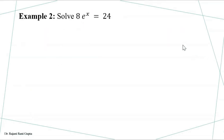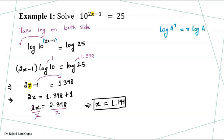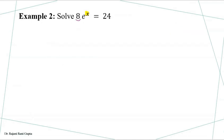Let's look at another example. Here, when asked to solve, it means we have to find the value of x. But unlike the previous question, we have 8 as a coefficient multiplying e to the power x. Since we don't want a number in multiplication, we first divide both sides by 8 to reduce it to that form.